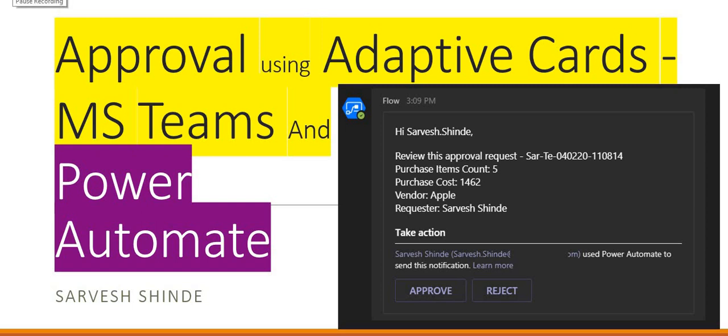Hey guys, welcome back to Power Apps Learning Channel. Today we are going to learn about adaptive cards and how we can perform approval actions using adaptive cards with Microsoft Teams and Power Automate. With Power Automate you can use the default approval action where a user can take action from the Outlook email or the mobile app. Here we are going to learn about how a user can take action from Microsoft Teams itself.